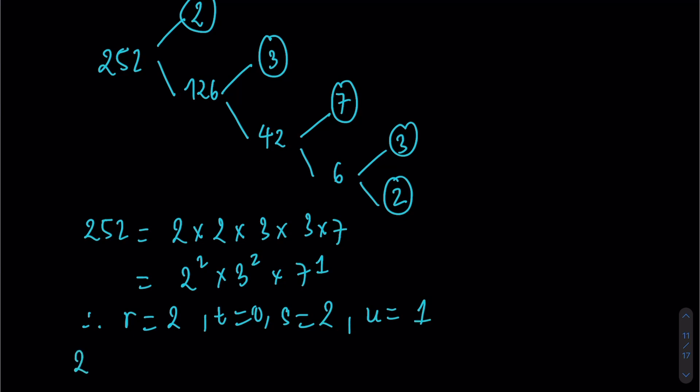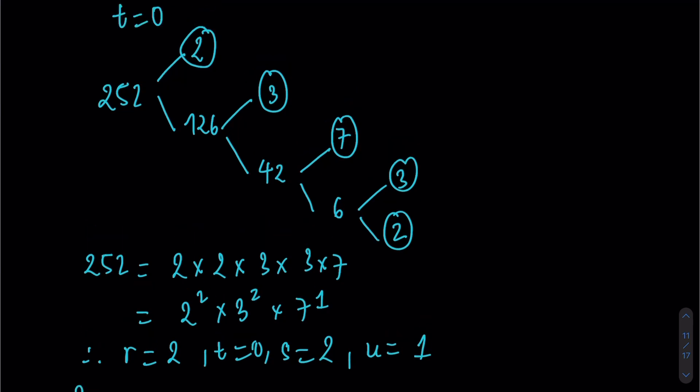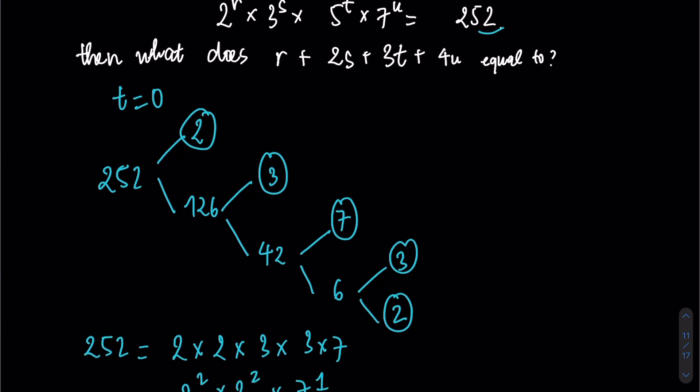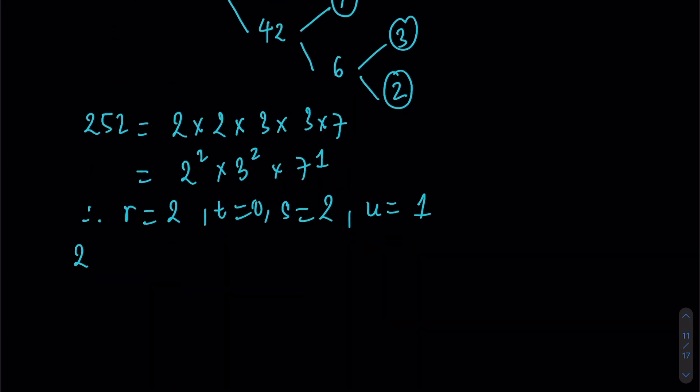So the final answer of R plus 2S plus 3T plus 4U equal to 2 plus 2 times 2 plus 3 times 0 plus 4 times 1, which equal to 10. 10 is the final answer of the question.